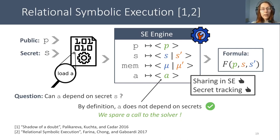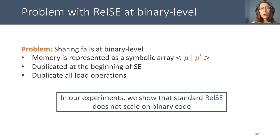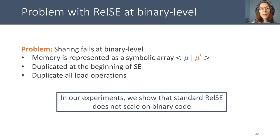So here we have a great technique which enables sharing and tracks secrets to spare queries. Unfortunately, this sharing fails at binary level, because the whole memory is duplicated as it is represented as a pair of symbolic arrays. Because of this, all the load operations are also duplicated. We can no longer share expressions between executions, and worse, we lose track of secret dependencies and cannot spare queries to the solver.